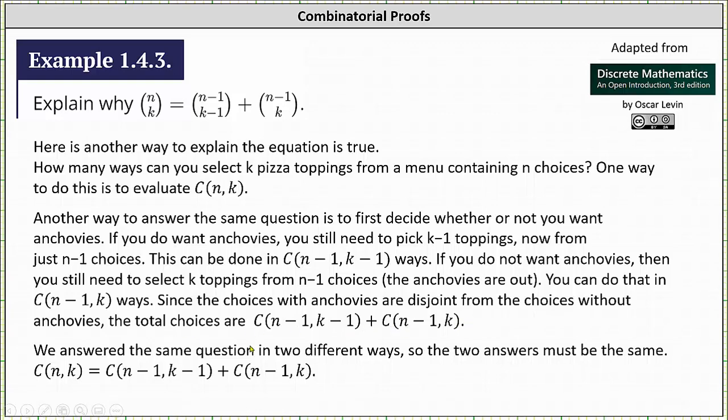So once again, we answered the same question in two different ways, so the two answers must be the same. N choose K equals N minus one choose K minus one plus N minus one choose K.